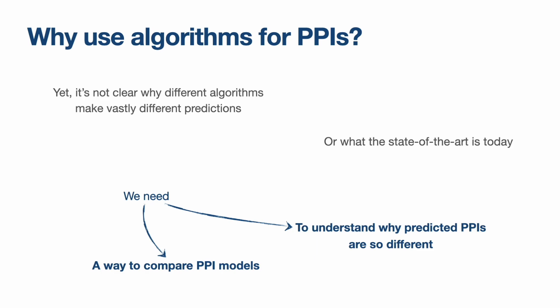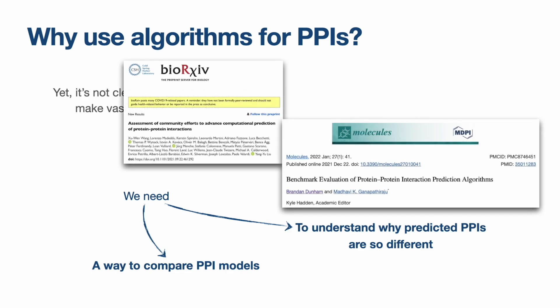I'll mention a couple of recent publications that have actually looked at benchmarking PPI prediction tools, which was long overdue and very welcome. But what we still need is something more scalable, which means authors would follow standardized best practices — and we're not quite there yet.